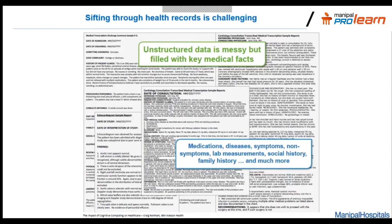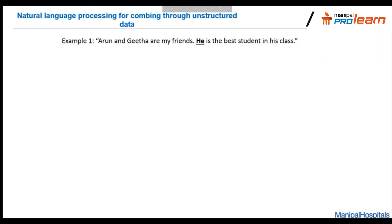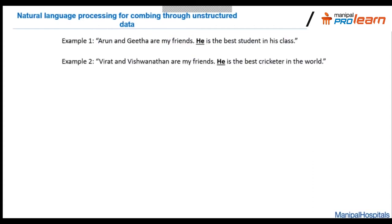Natural language processing (NLP) helps extract meaning from unstructured text. Even a five-year-old can resolve the sentence: 'Arun and Gita are my friends. He is the best student in his class.' — they'd know 'he' refers to Arun. But this is not obvious to a computer, and even someone outside the cultural context wouldn't know if 'he' refers to Arun or Gita. Similarly: 'Virat and Vishwanathan are my friends. He is the best cricketer in the world.' — you need context about who is a cricketer to resolve this. NLP tries to do this by linking entities in text to external knowledge bases.